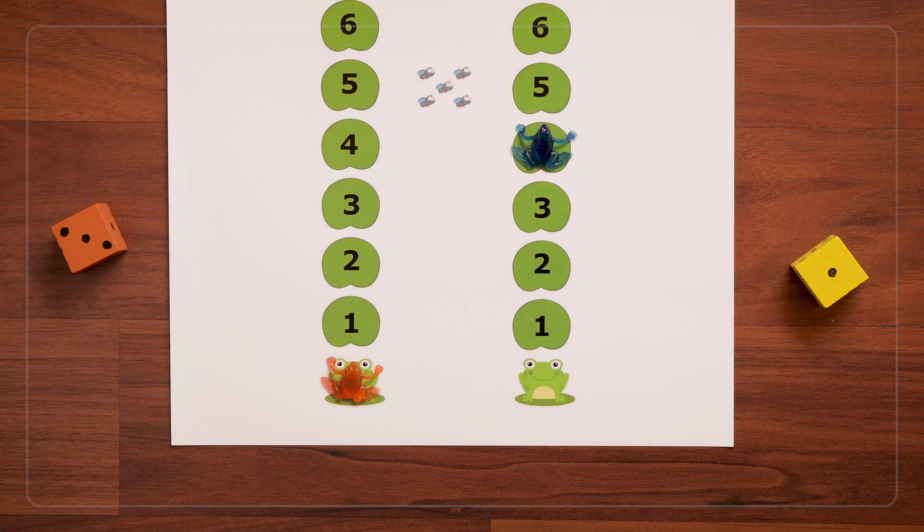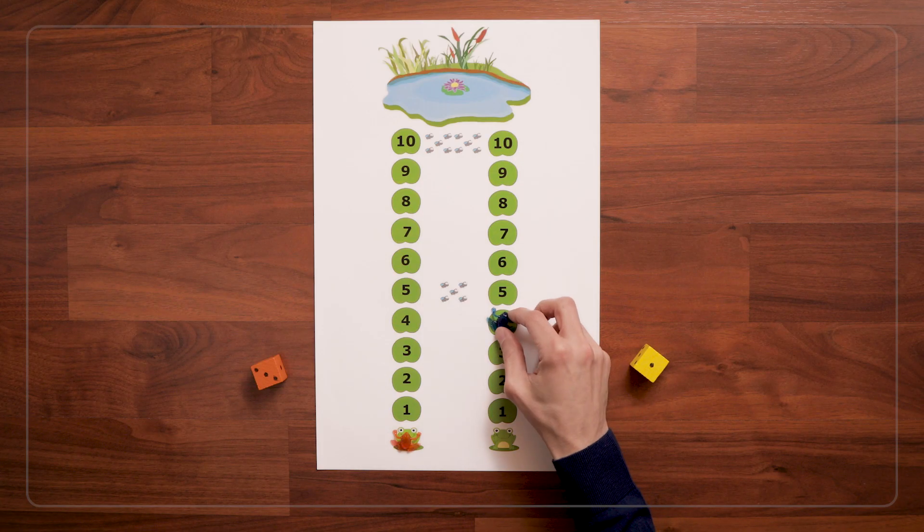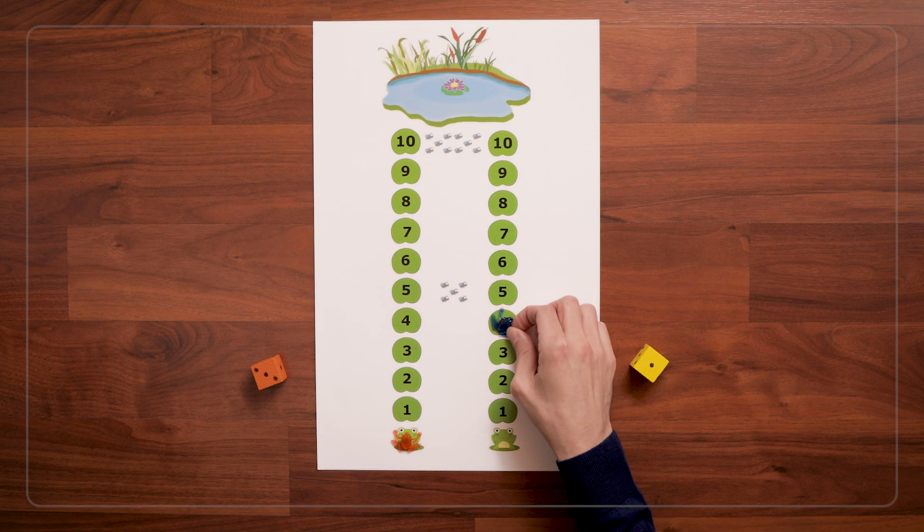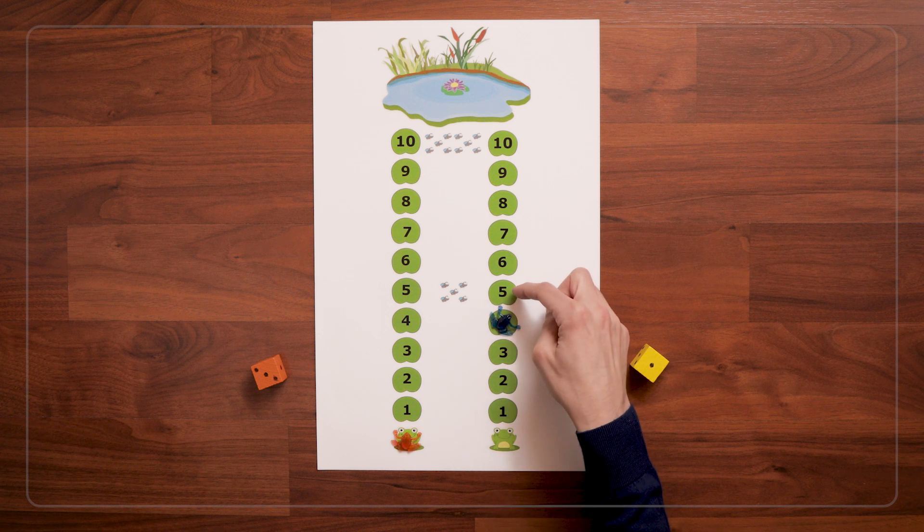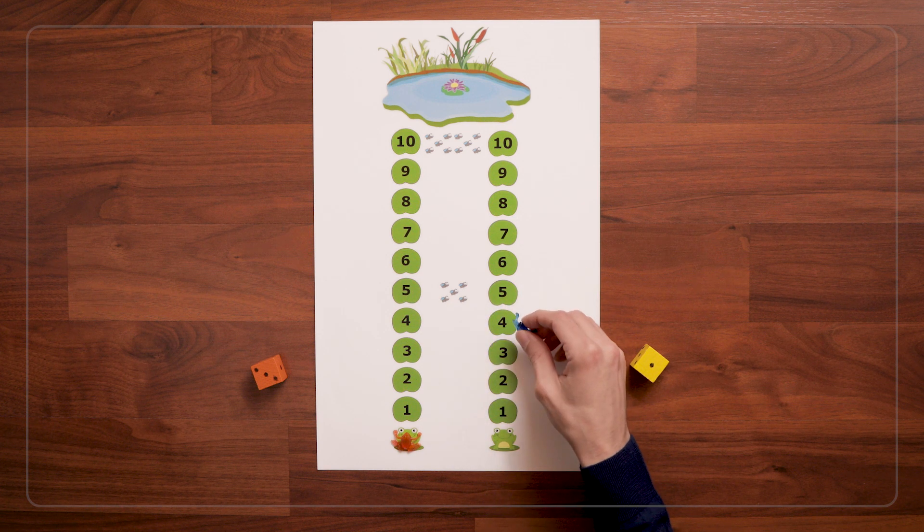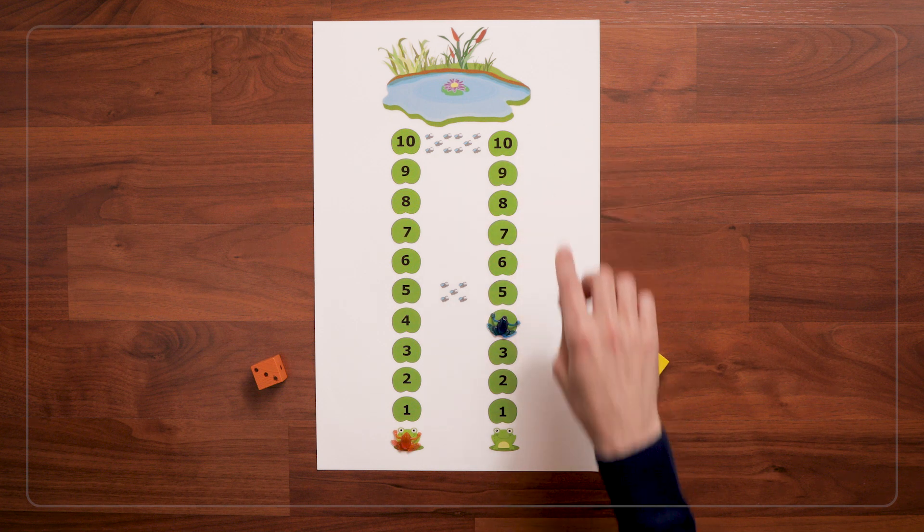Another thing that's tricky for a lot of children is sometimes they want to do their first jump on the number they're already on instead of jumping forward. So you really want to emphasize that with each roll, the frog moves forward.